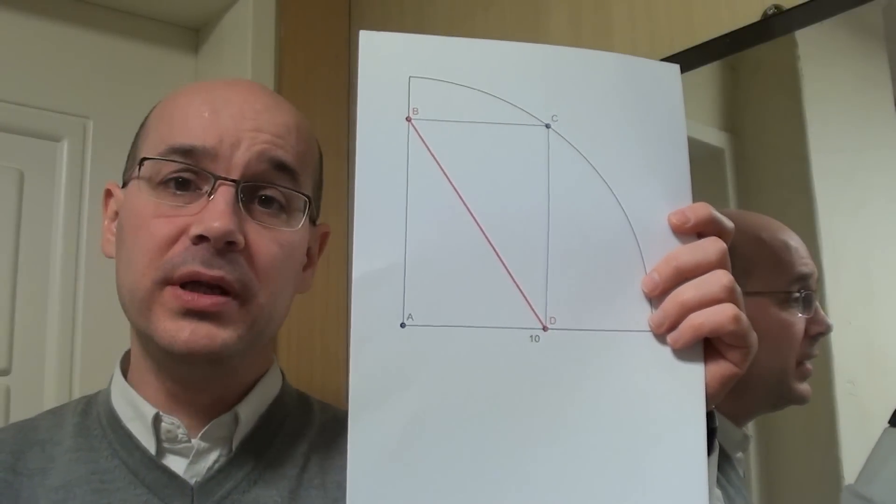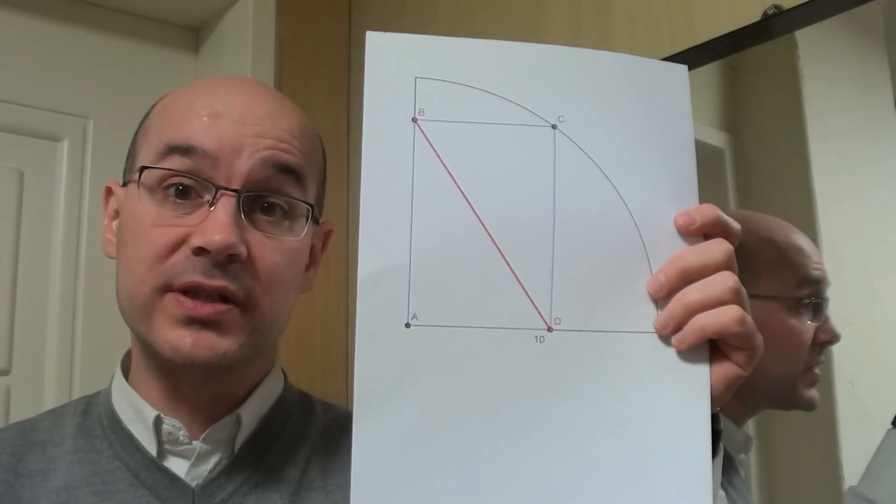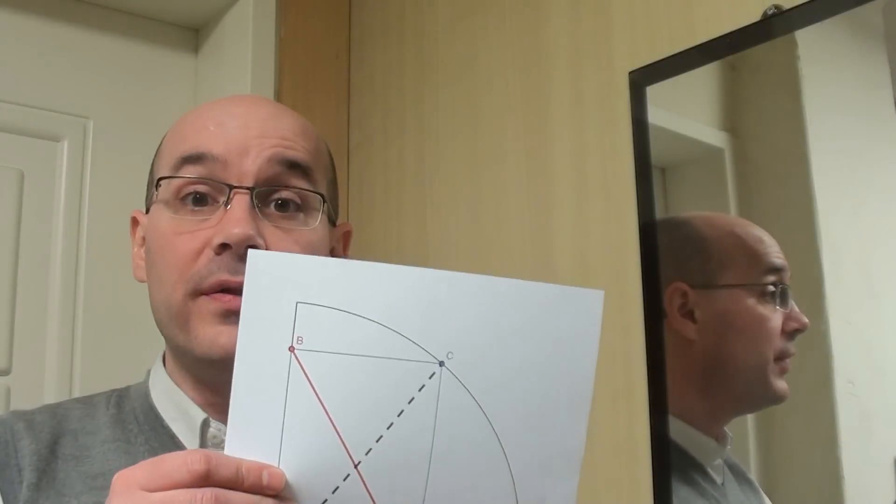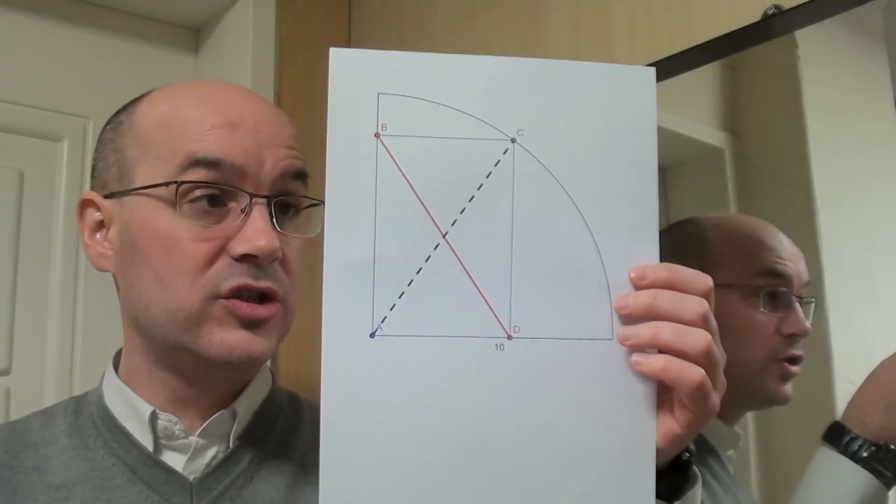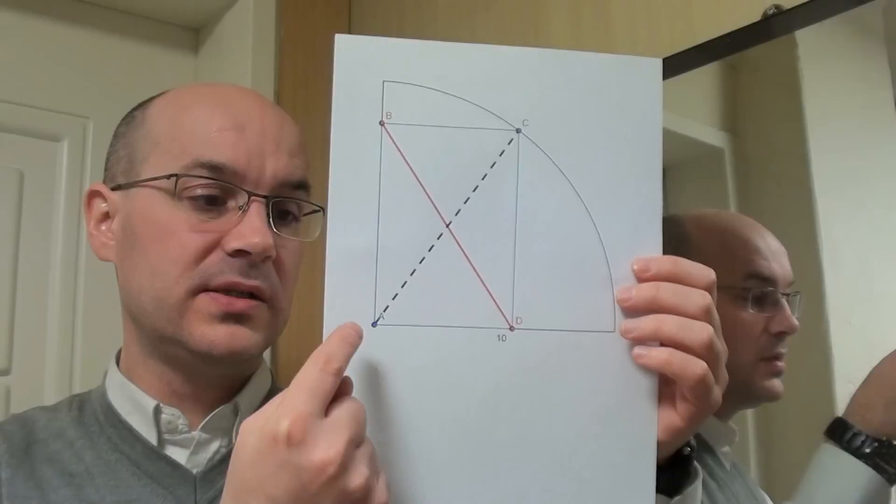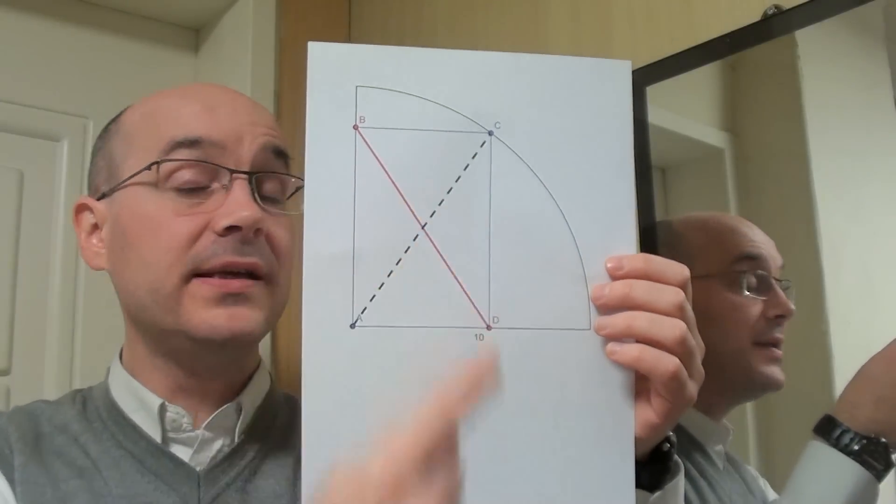Well, we need this very interesting property in rectangles, which is that their diagonals have the same length, which means that BD is the same length as AC.